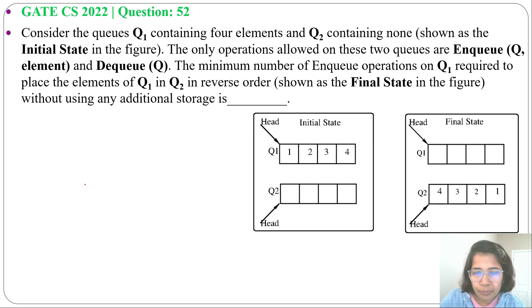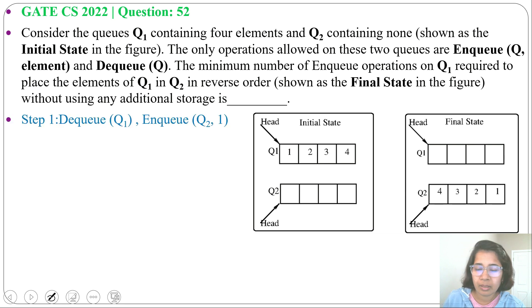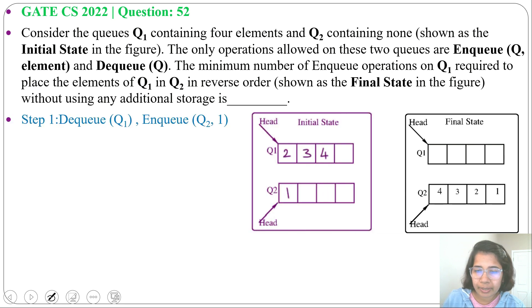We will DQ from Q1 and insert at Q2 — DQ from Q1 and NQ 1 at Q2. After this NQ we get: Q1 contains 2, 3, 4 and Q2 contains 1.